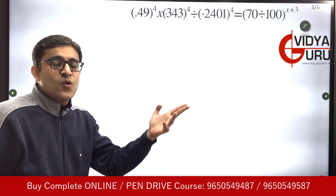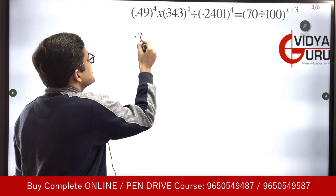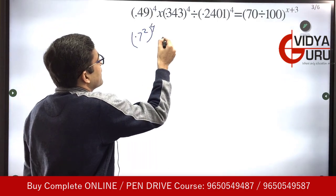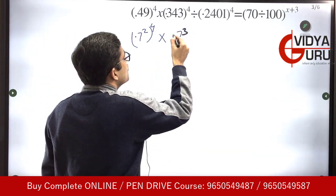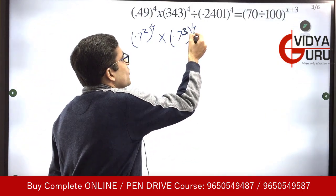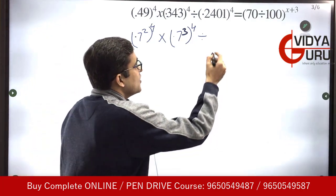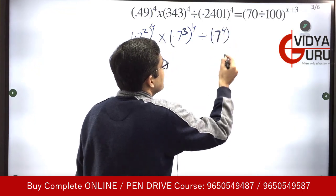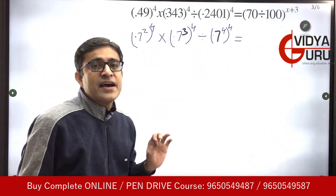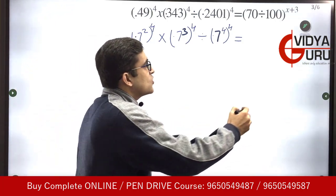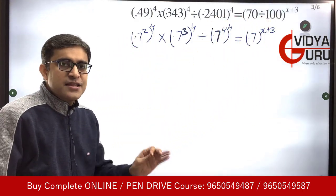Now 0.49 is 0.7 square, raised to power 4. This is multiplied by 0.343, which is 0.7 cube, with power outside 4. The next term, 0.2401, can be written as 0.7 raised to power 4, with power outside 4. On the right-hand side, we have 70 divided by 100, which is also 0.7. So the right side is 0.7 raised to power x plus 3. We have to find the value of x.